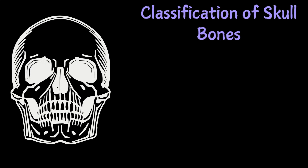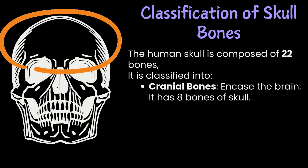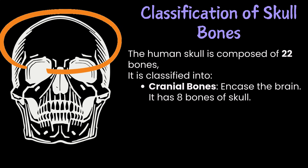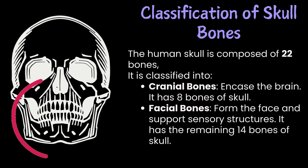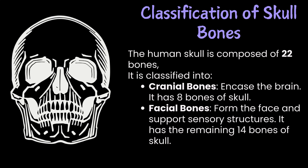The human skull is composed of 22 bones, classified into two categories. Cranial bones encase the brain and consist of eight bones. Facial bones form the face and support sensory structures, comprising the remaining 14 bones of the skull.